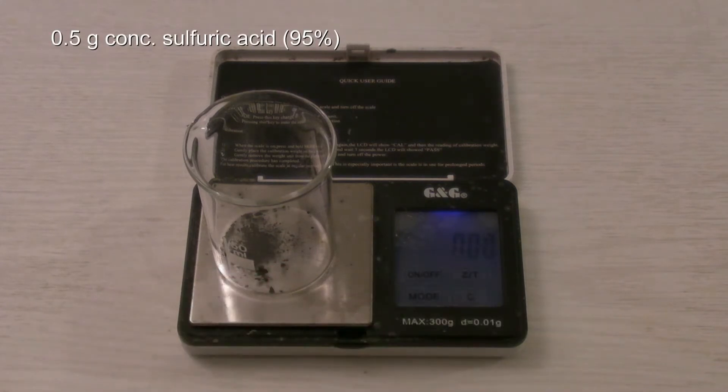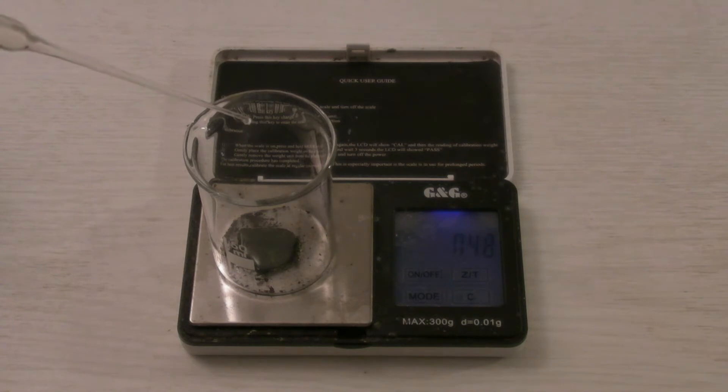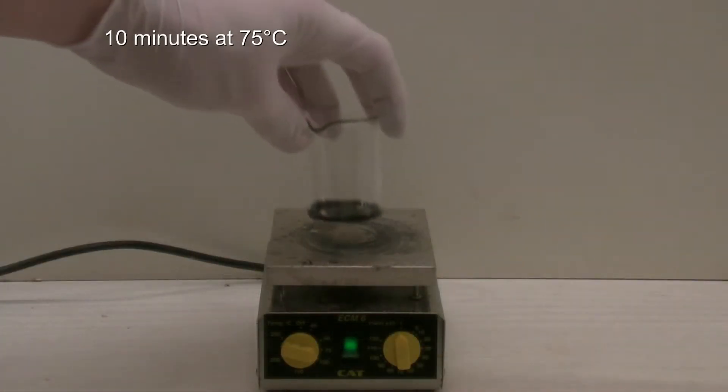Then, 0.5 grams of sulfuric acid were added. Even at room temperature, the indigo reacts slowly with the acid. To speed up the reaction, the beaker is then placed on a hot plate and heated up to 75 degrees C for about 10 minutes. It should be taken care that the indigo is mixed completely with the acid.